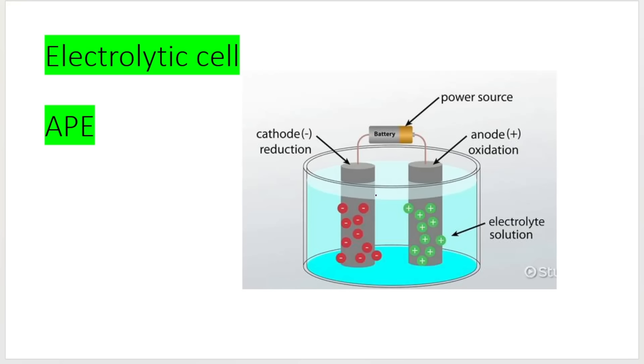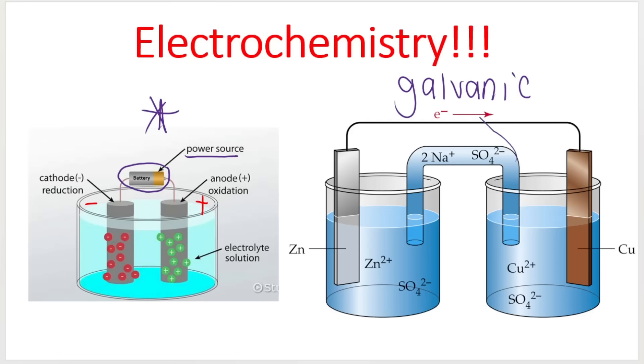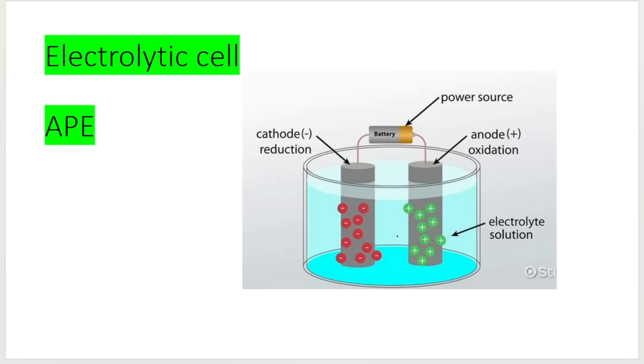There's no salt bridge like there is in the galvanic cell. Remember, this is a salt bridge. This one here has no salt bridge. And it's very important to note that there will always be a power source like a battery. Remember, a battery is a DC power source. We like to use a DC power source. I will discuss why a little bit later.